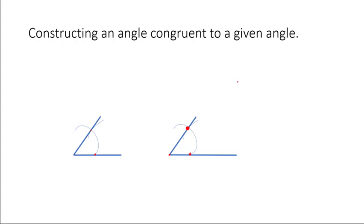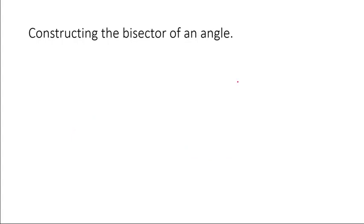Now lastly, we're going to work with constructing the bisector of an angle. We'll use the same angle — and this works for any angle. To create the bisector, make sure you know what bisector means: bisector means to cut in half. So we're going to create a segment that cuts the angle in half. We'll get the exact location of that bisector by constructing with a compass and a straight edge.